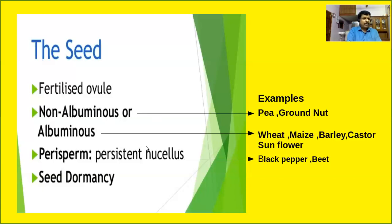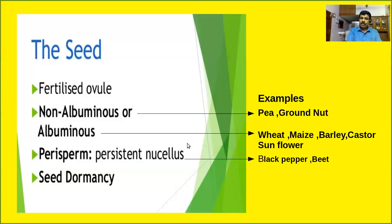In albuminous seeds, some seeds are able to retain a part of endosperm, as it is not completely consumed during embryo development. Such seeds are collectively called albuminous seeds. Many examples are given in the NCERT textbook — wheat, maize, barley, castor, sunflower, etc. are considered albuminous seeds.